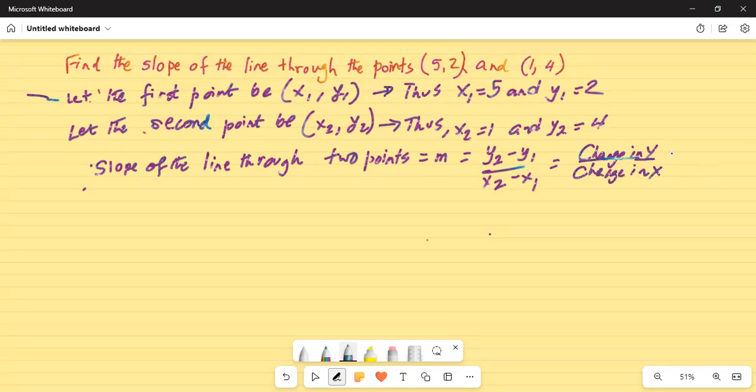Some people call this rise over run. Change in y is the y-coordinate of the second point minus the y-coordinate of the first point, which is equal to 4 minus 2. That is equal to 2.